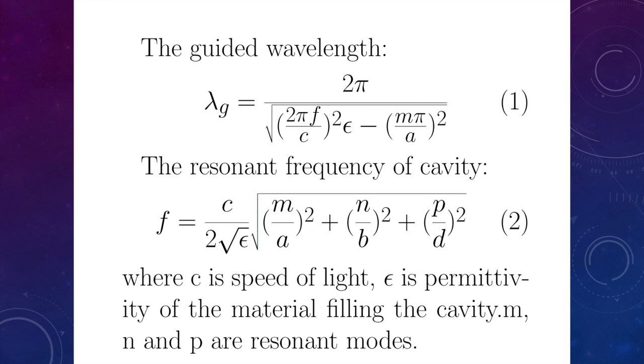As shown in equation 2, the resonant frequency is decided by three key things. The first is the physical dimension of the cavity, which is designated as a, b, and d in this equation. They stand for the width, the height, and the length of the cavity. As for m, n, and p, they are the resonant modes of the cavity. As you know, the cavity can resonate at different modes, so m, n, p can decide which kind of mode it is working. Another key parameter is epsilon in equation 2.